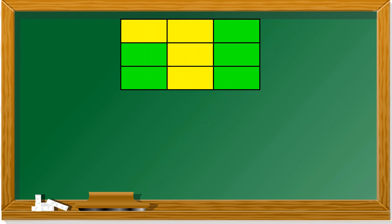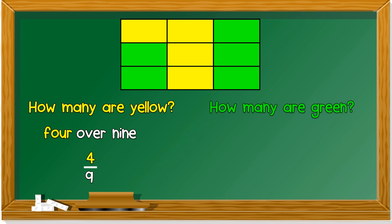Another example, this time, all has colors, but yellow and green. How many parts are here? I'm not going to count, you have to count. There are nine parts, sembilan bahagian, kan? How many are yellow? Count. The answer is four. So, it's four over nine. How many are green? Count. Five. So, it's five over nine.